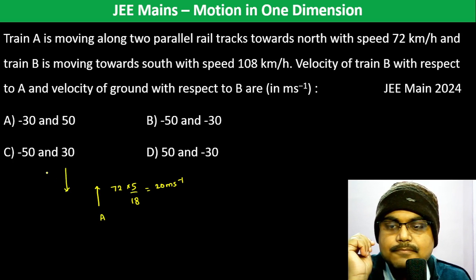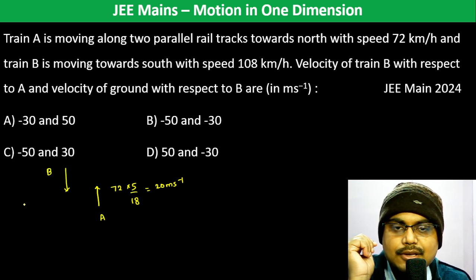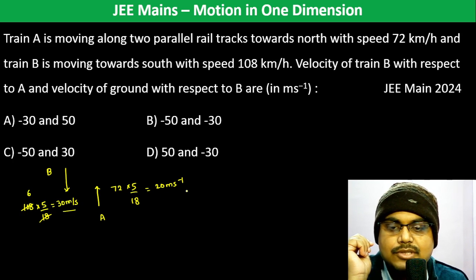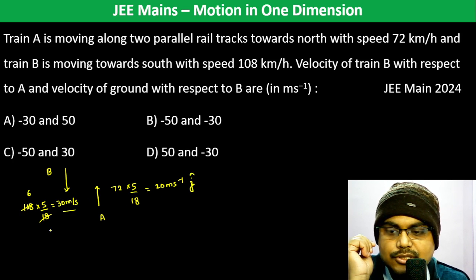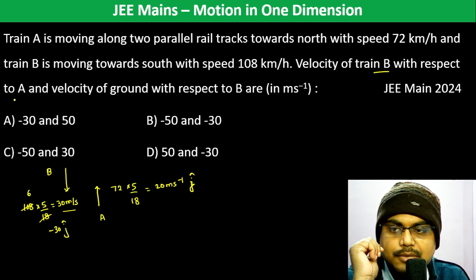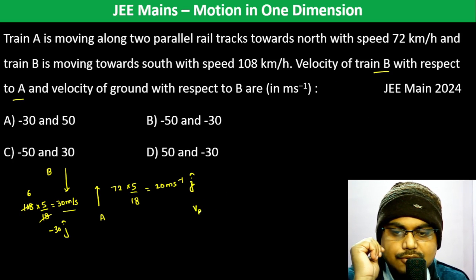Train B's speed: 108 into 5 by 18 equals 30 meters per second. So velocity of A is 20 j cap (northward), and velocity of B is minus 30 j cap (southward). Now finding velocity of Train B with respect to A.